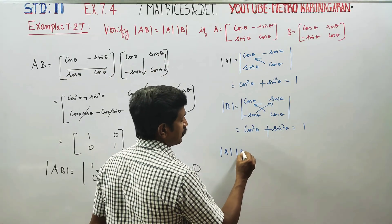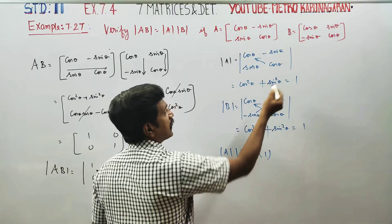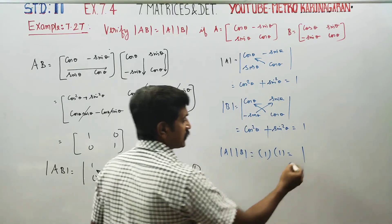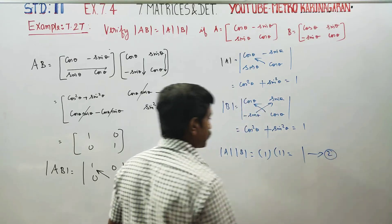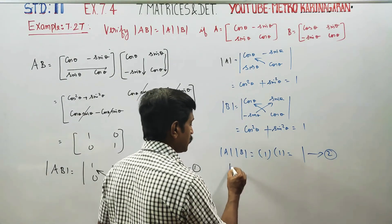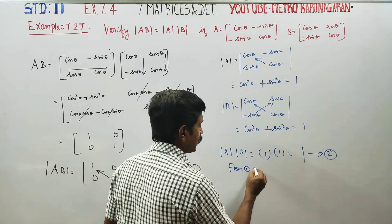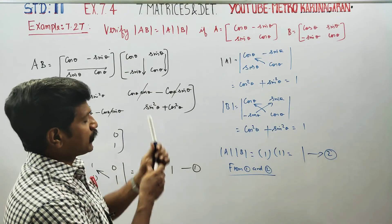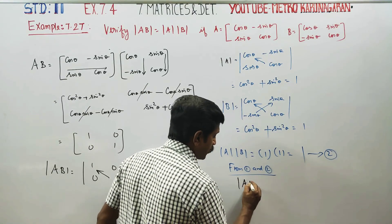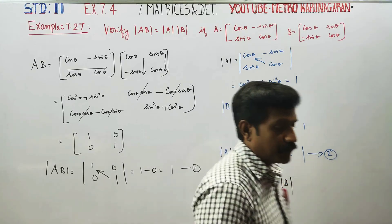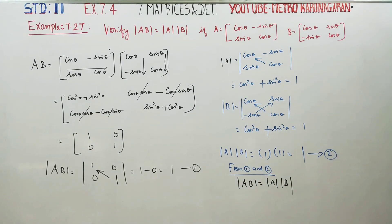Determinant of A equals 1 and determinant of B equals 1. From results 1 and 2, you can declare that determinant of AB is equal to determinant of A into determinant of B. Hence verified. Thank you.